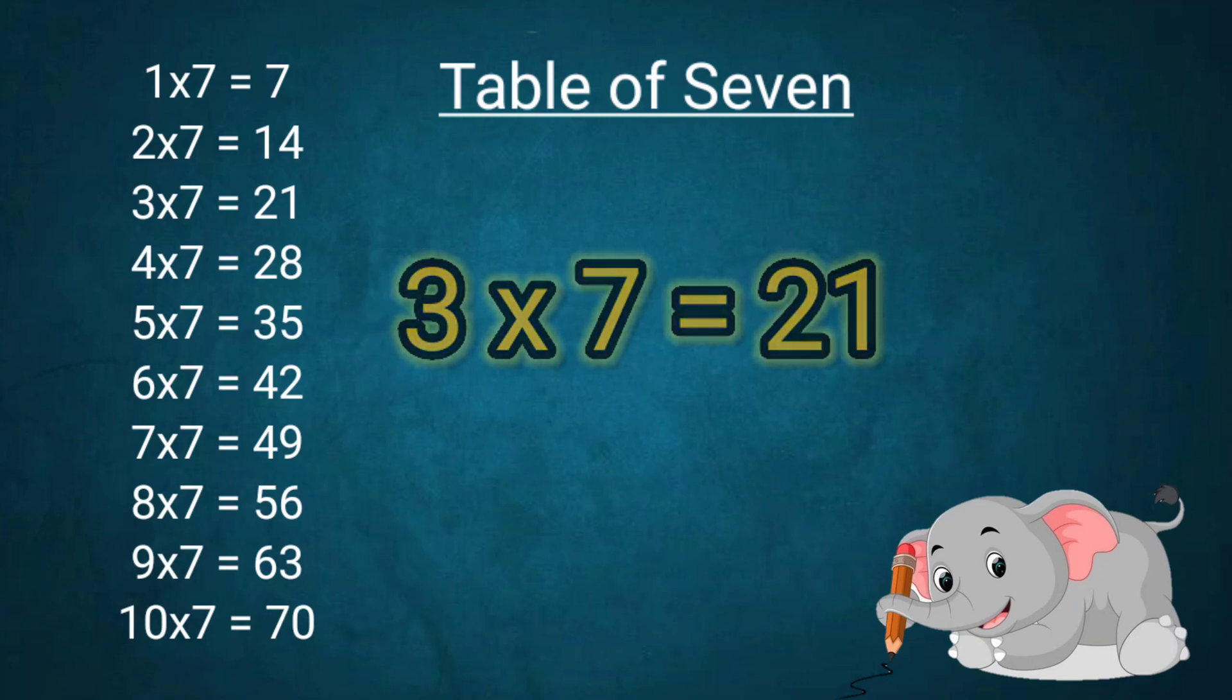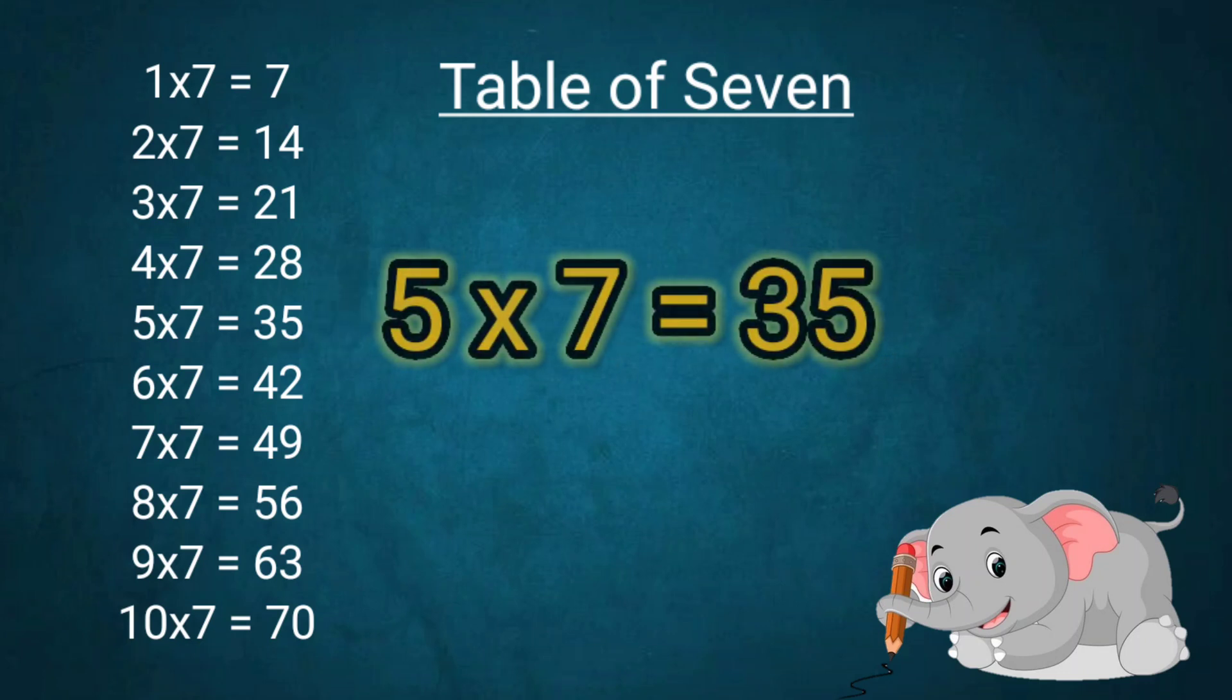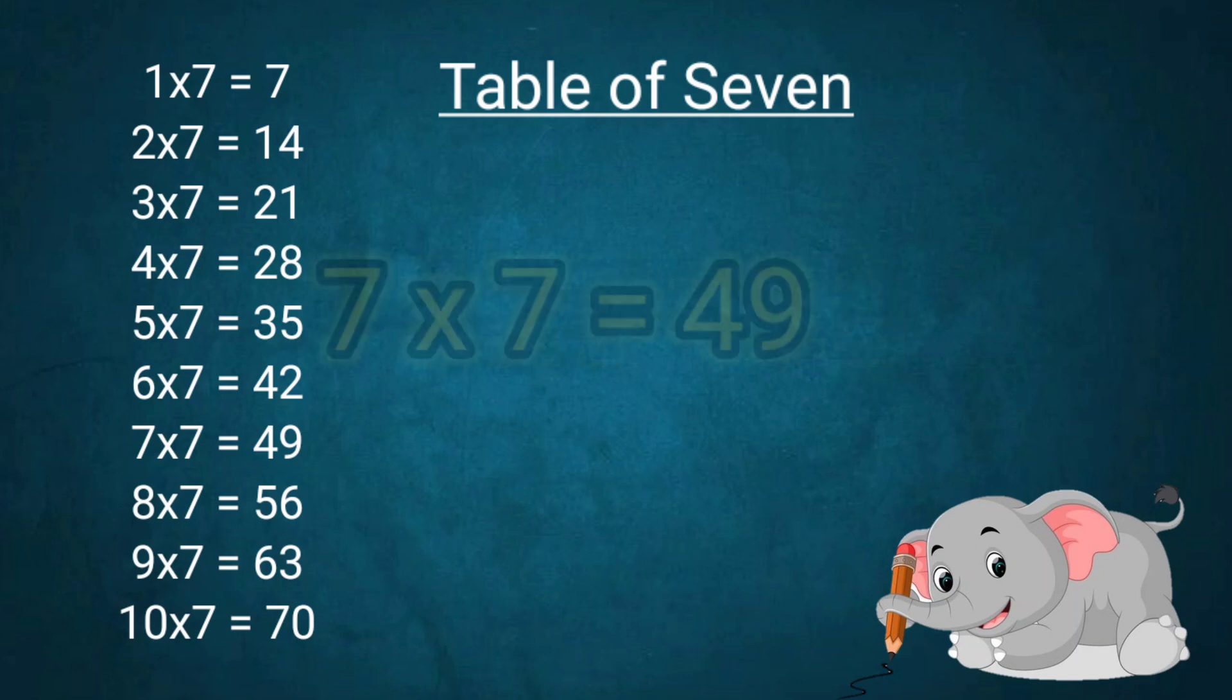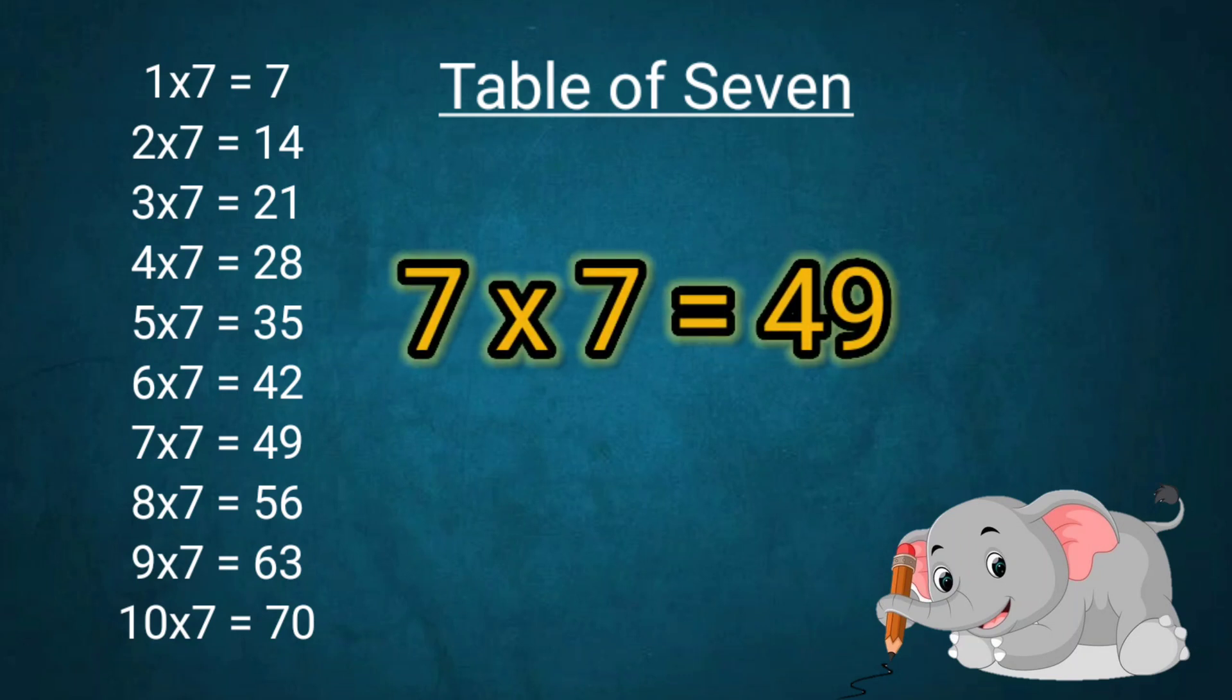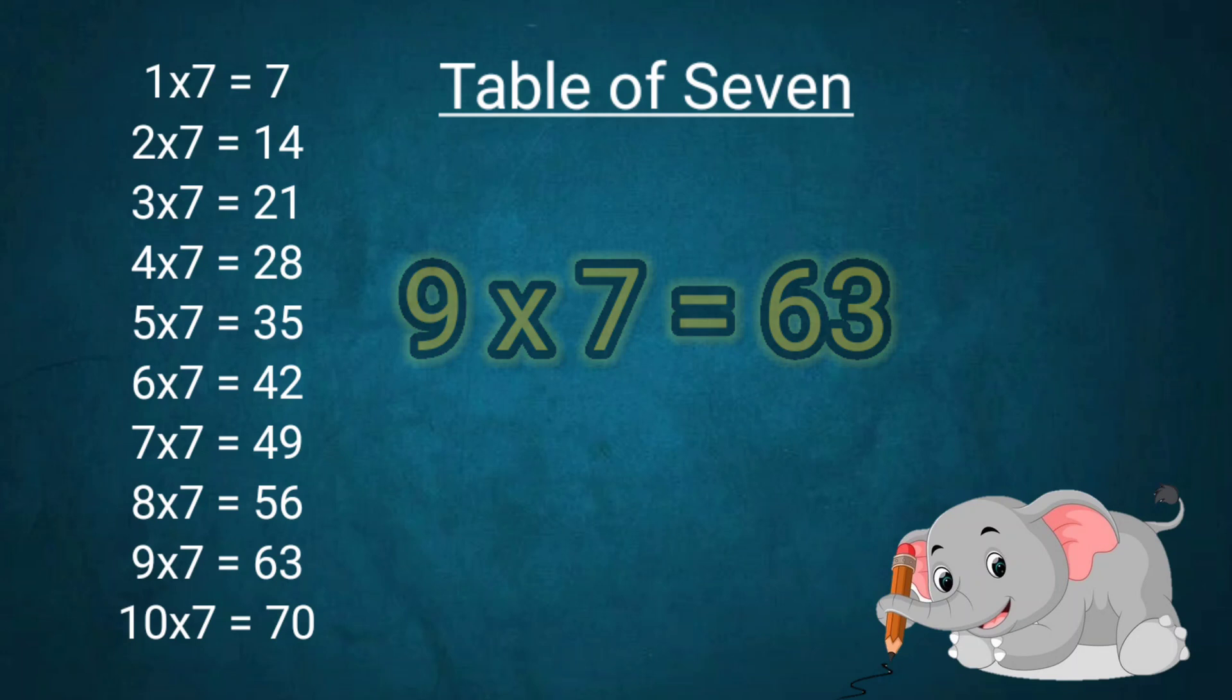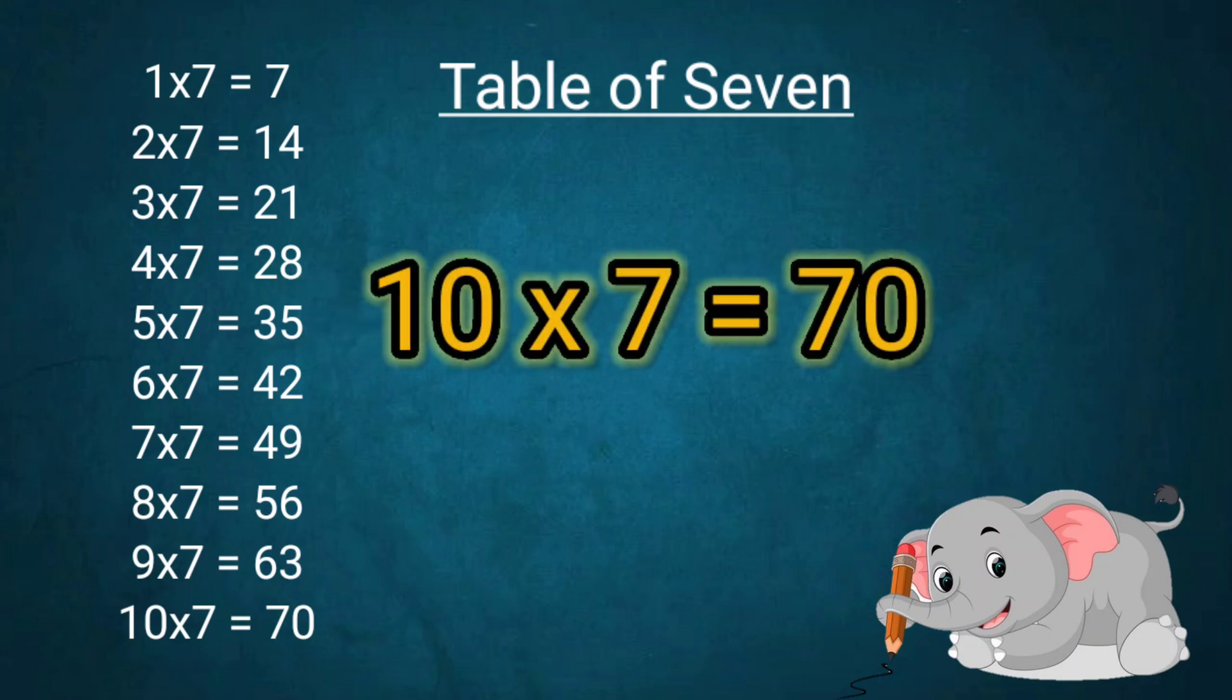4x7=28, 5x7=35, 6x7=42, 7x7=49, 8x7=56, 9x7=63, 10x7=70.